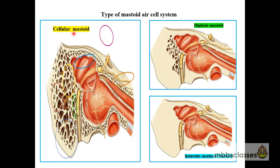To differentiate between the three types of mastoids: in the cellular mastoid, the mastoid ear cells are of different sizes and numerous in number — the ear cells are bigger and more numerous compared to the diploic mastoid. In the diploic mastoid, the ear cells are small and less in number. In the sclerotic or acellular mastoid, there are no ear cells, no marrow spaces — they are totally white or solid bone.